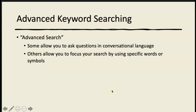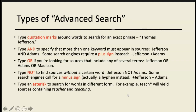Advanced keyword searching allows you to ask questions in conversational language or to focus your search using specific words or symbols. This is about the formula — the order of the words you type and those qualifying words. If you put quotation marks around words, you're searching for that exact phrase. For example, searching for "Thomas Jefferson" in quotation marks will return only articles that contain those words exactly together.